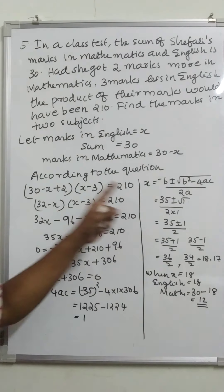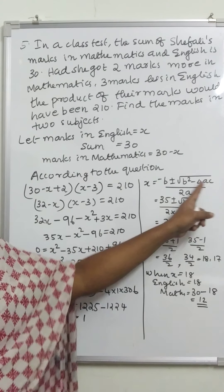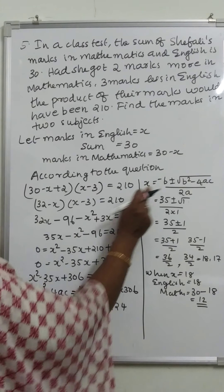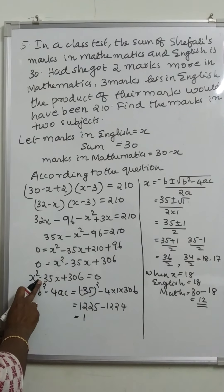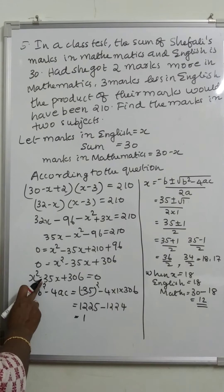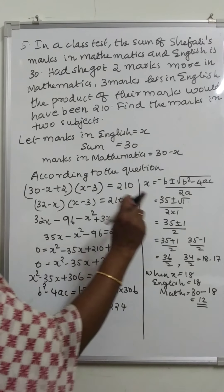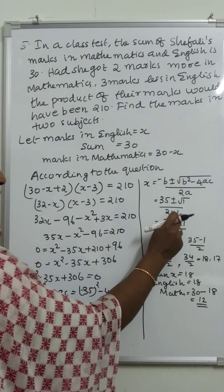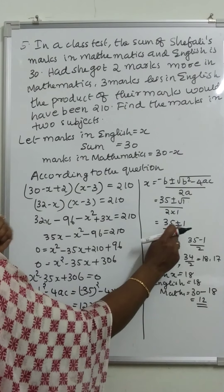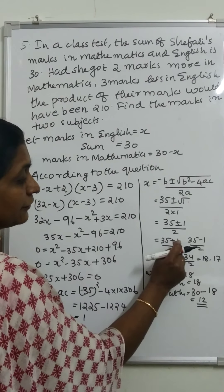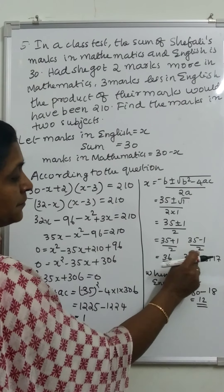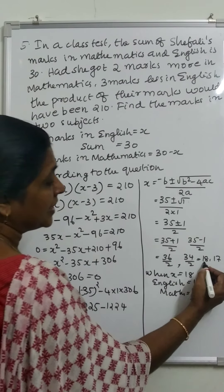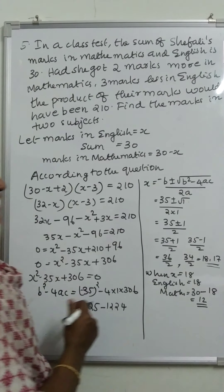The equation gives x equal to minus b plus or minus root of b squared minus 4ac by 2a. Here b is equal to minus 35, so minus b is equal to plus 35. That is x equals 35 plus or minus root of 1 by 2, which is 35 plus or minus 1 by 2. Splitting: 35 plus 1 by 2 is 36 by 2 equals 18, and 35 minus 1 by 2 is 34 by 2 equals 17. The values of x are 18 and 17.